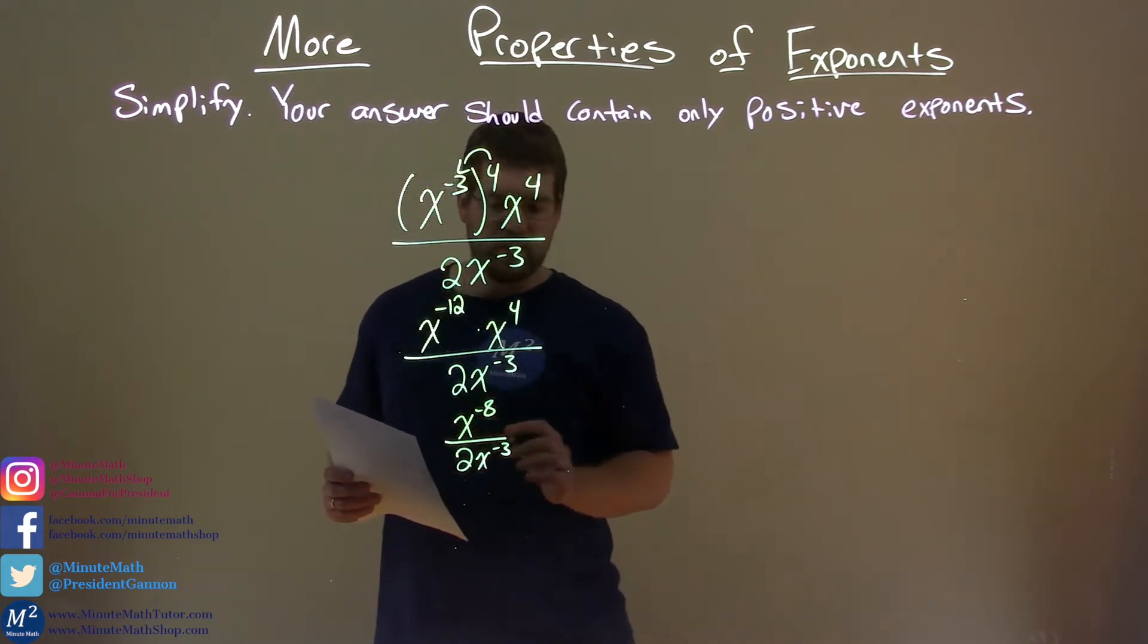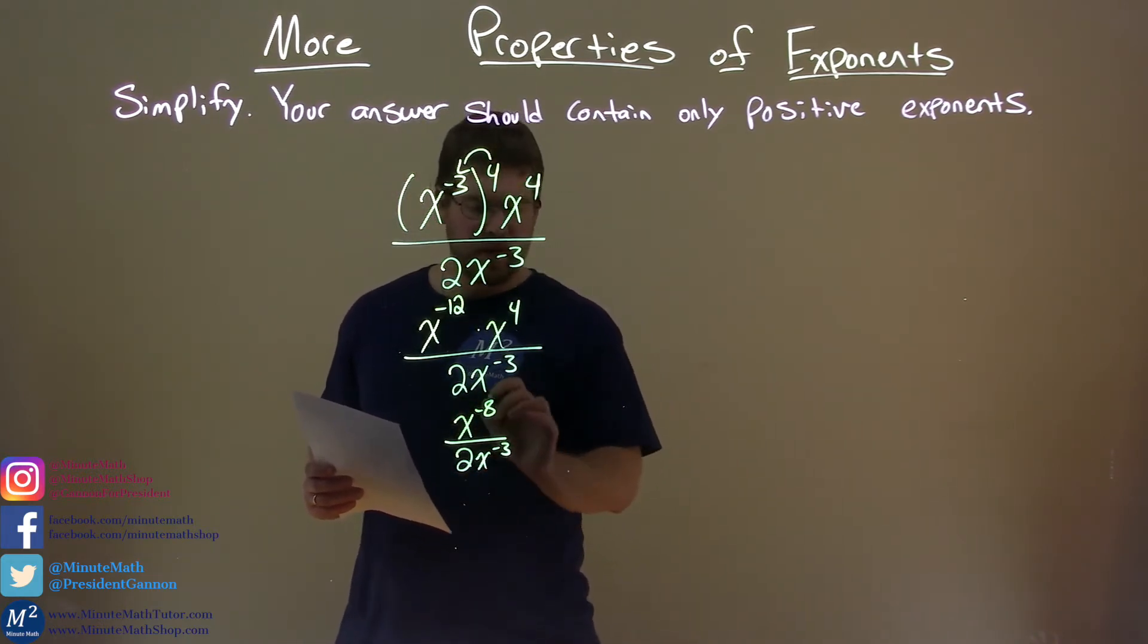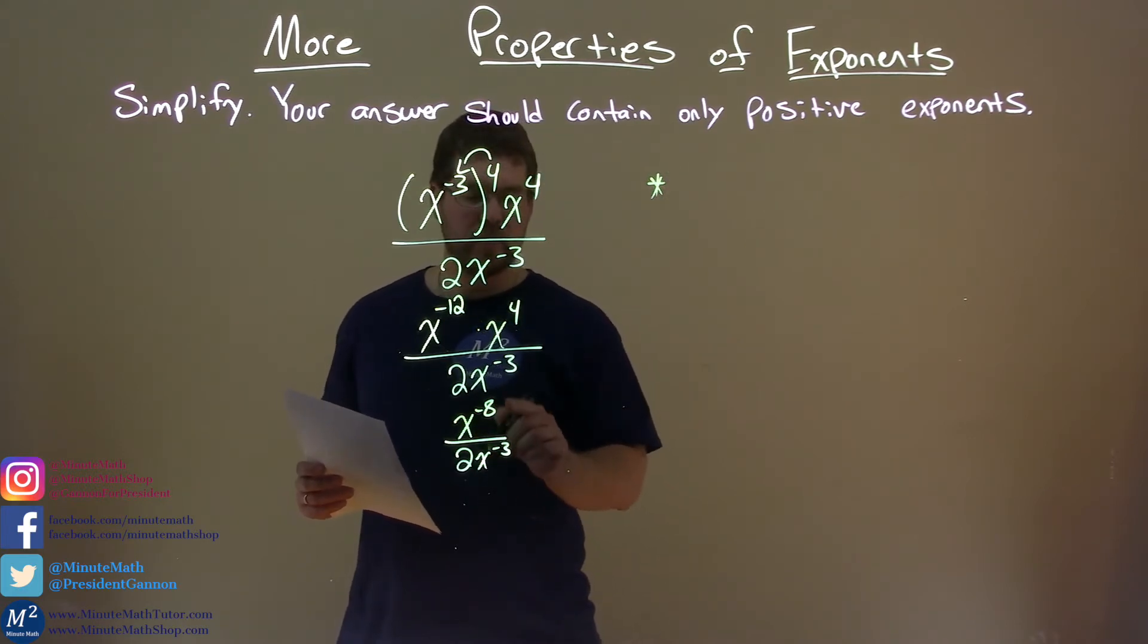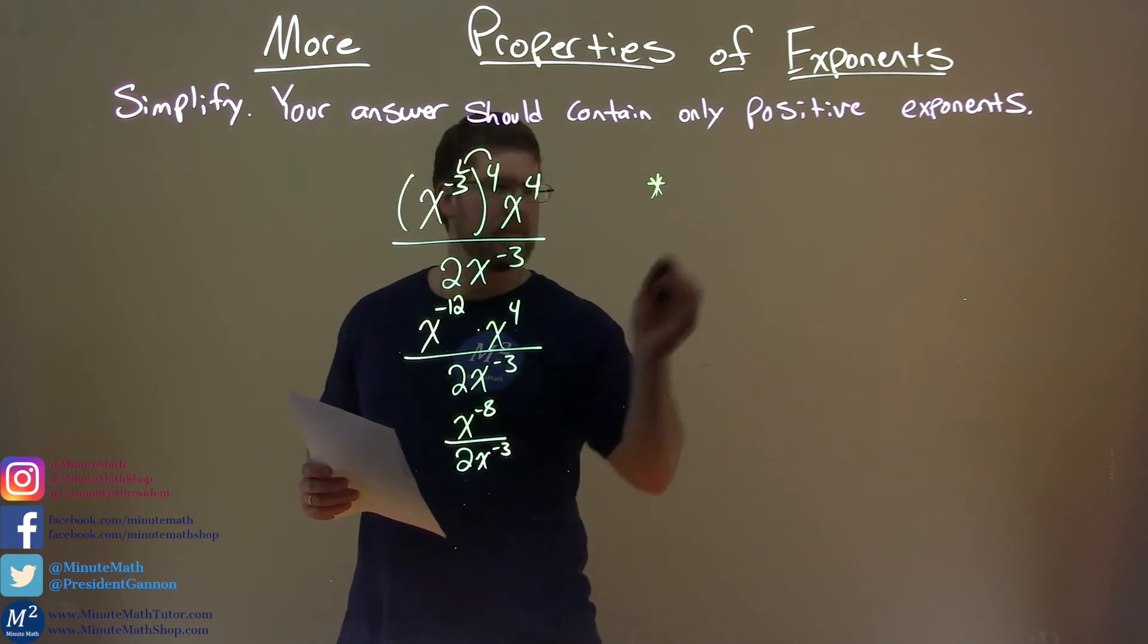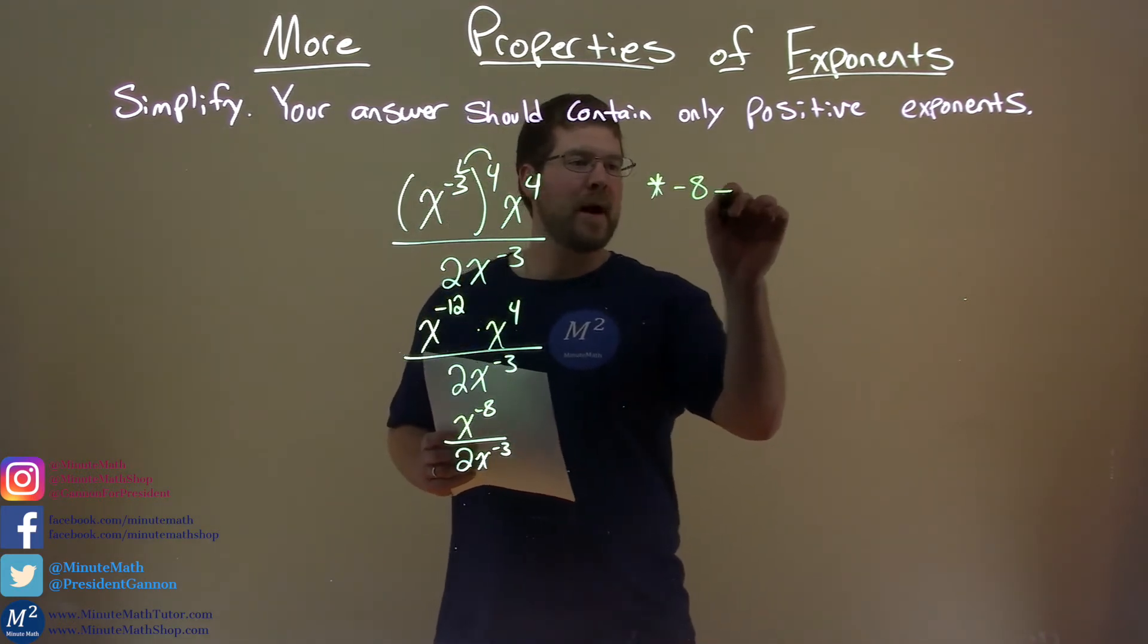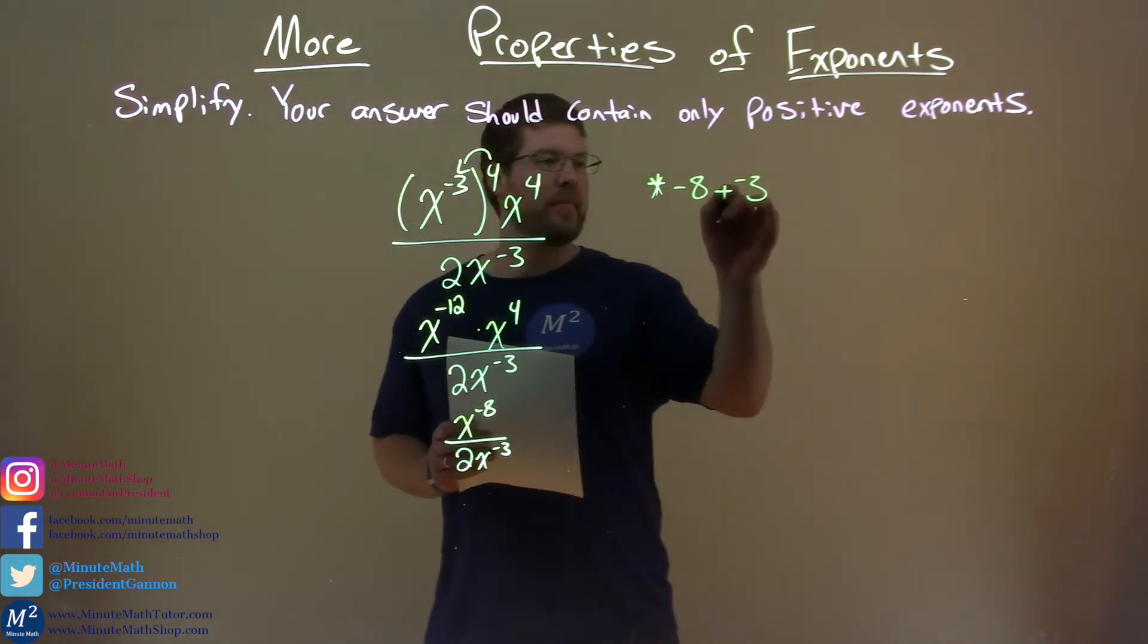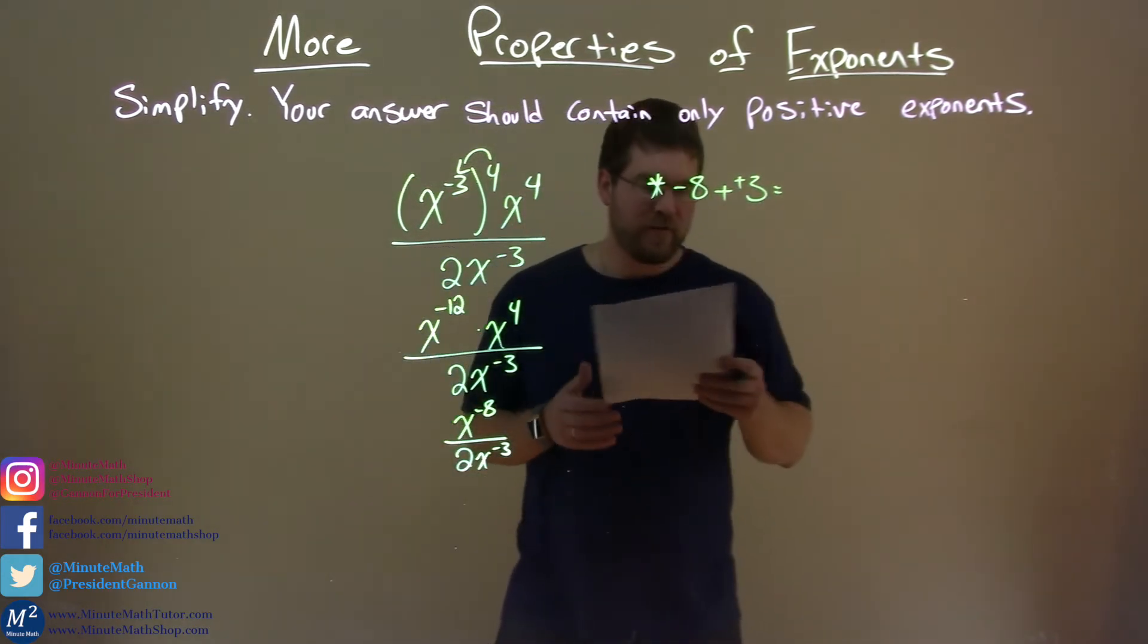Now, this is tricky. Let's look at this. We have division with the same base. Look at the exponents: negative 8 minus negative 3. So we take negative 8 minus a negative 3, because we subtract with division. That's like plus a positive, which comes out to be negative 5.